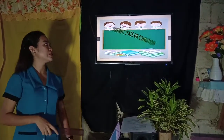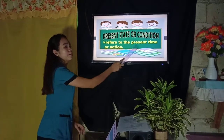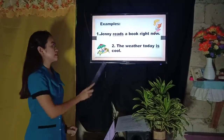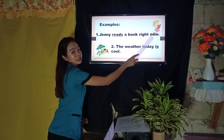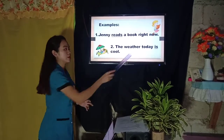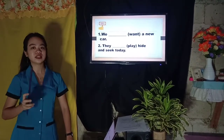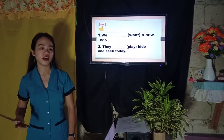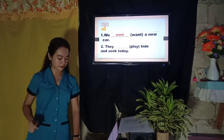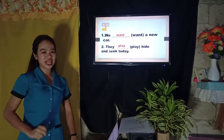The second use is present state or condition — referring to the present time or action, meaning at this moment. Example: Jenny reads a book right now. Number two: The weather today is cool — present because of the time expression 'today.' Now answer: We __ a new car. Very good — 'want,' because the subject 'we' is plural, so we use a plural verb. Number two: They __ hide and seek today. Very good — 'play,' plural subject.